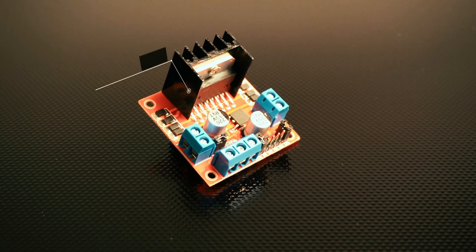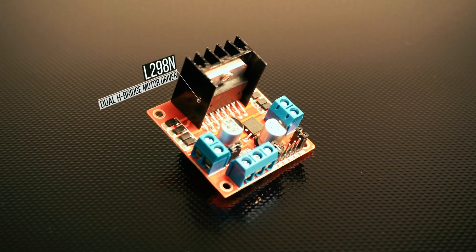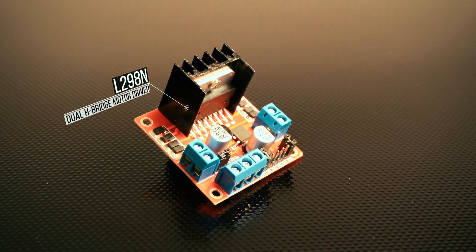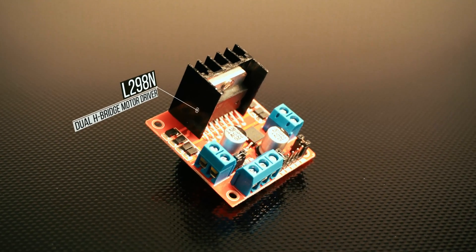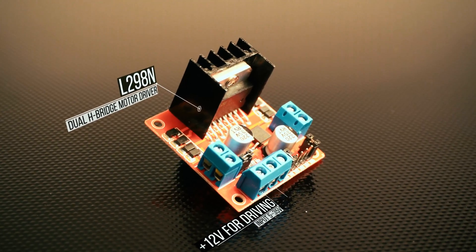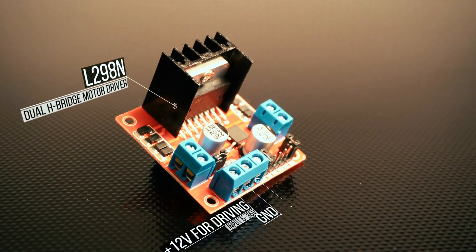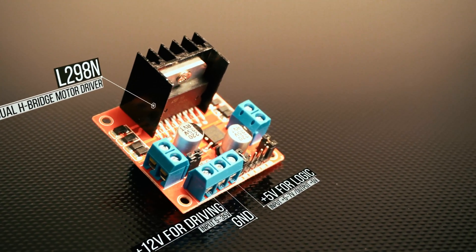Take a close look at this module. The biggest part with the heatsink on is actual L298N chip. The front terminal blocks are for the input and output of the power. The 12V is for driving the motor, and the 5V is for the logics.